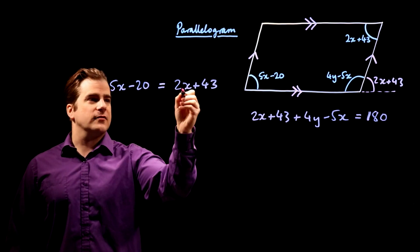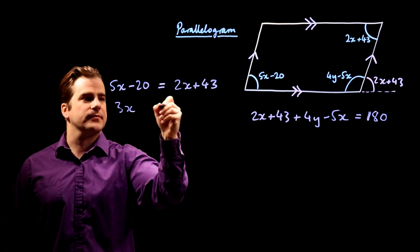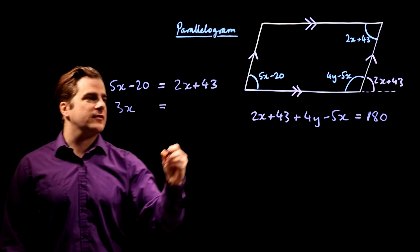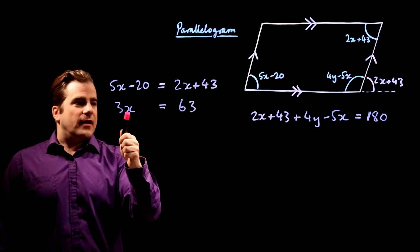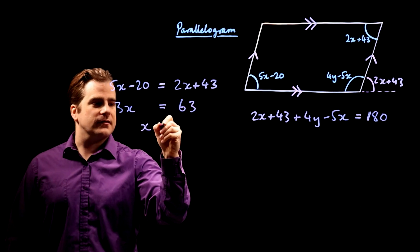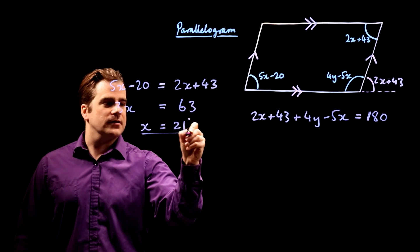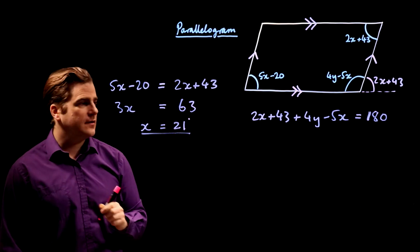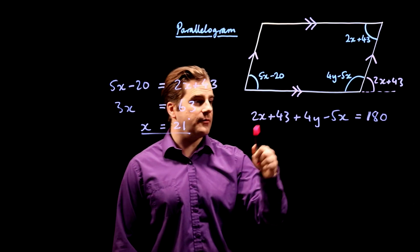Might as well do that. So subtract 2x on both sides, and you get 3x over here. Add 20 to both sides, and you get 63 over there. So therefore, x is 63 divided by 3. So x is 21 degrees. We've got x. Stick that into this equation, substitution method, and we get y.